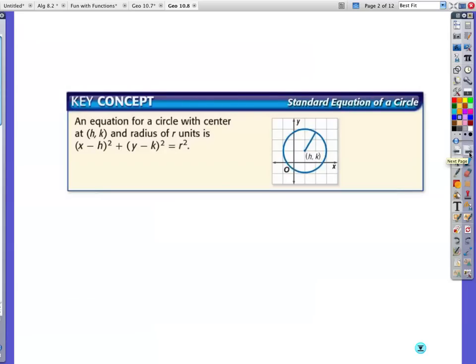Okay, here's your standard equation of a circle. h, k is your center, and radius is r, and they have (x - h)² + (y - k)² = r², so your radius squared.